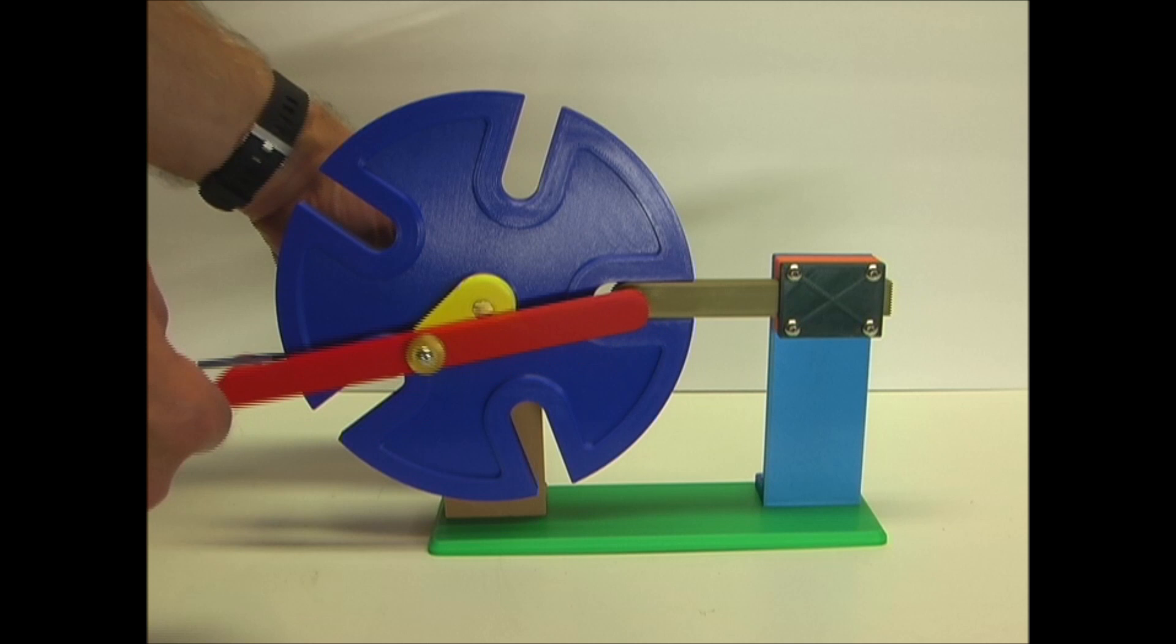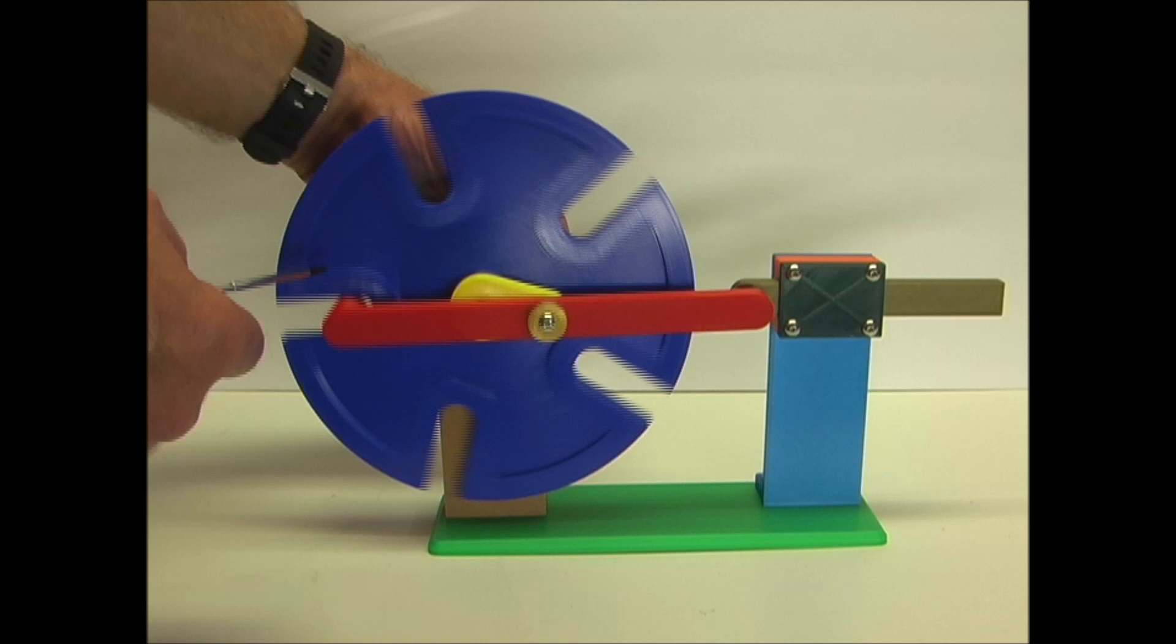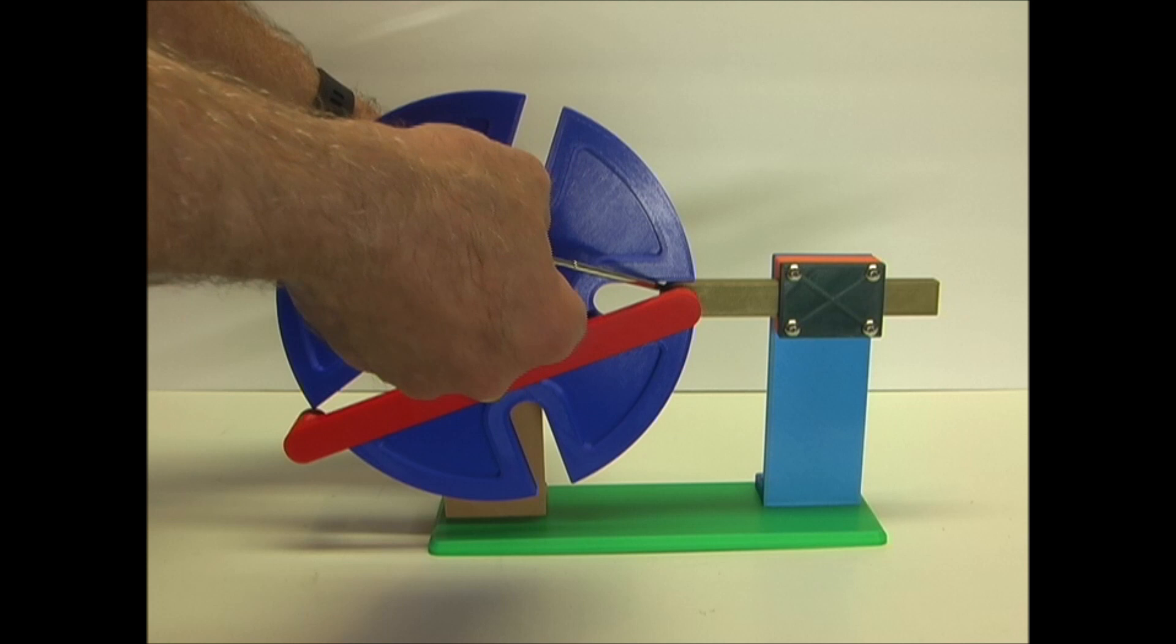So this linkage arm, with this pin on the end, comes up and engages each slot and rotates the wheel. And when it disengages,